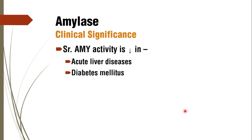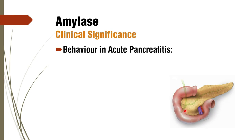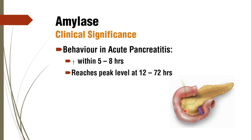Serum amylase activity is decreased in acute liver diseases and diabetes mellitus — probably because the exocrine component of the pancreas is also affected in diabetes mellitus. Regarding the kinetics of amylase in acute pancreatitis: it starts rising in 5 to 8 hours, reaches its peak level at 12 to 72 hours, and returns to baseline in 3 to 4 days.